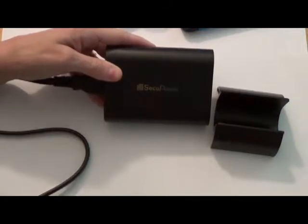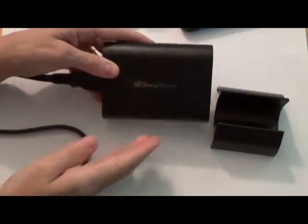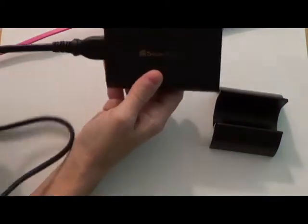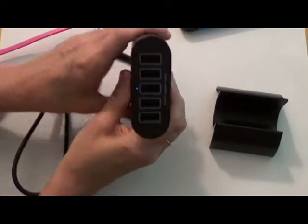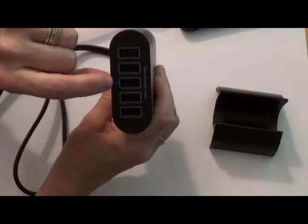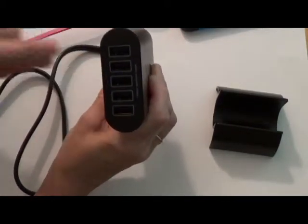Today we're taking a look at the SecuPower desktop USB charger. This is a USB charger that you plug into the wall, and it comes with the cable that you need to plug it into the wall. It has five USB ports and you can see here that it has a blue light to tell me that it's plugged in and it's on.